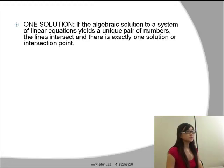If the algebraic solution to a system of linear equations yields a unique pair of numbers, the lines intersect and there is exactly one solution or intersection point.